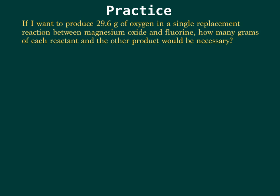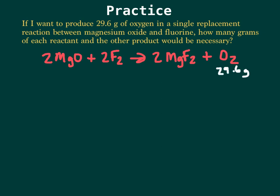So here's a problem that you can practice. It says you want to produce 29.6 grams of oxygen in a single replacement reaction between magnesium oxide and fluorine. How many grams of each reactant and the other product would be necessary? So the first thing you need to do is try to write a balanced equation. So why don't you pause it and try to write one right now. Okay, hopefully you really paused it, and hopefully you got the same balanced equation that I got. Now, this is what we're starting out with, 29.6 grams of this oxygen right here. And it doesn't matter that it's a product. You have a recipe. A balanced equation is like a recipe. So we can figure out the ratios of how many grams of each other reactant and the other product that we would end up with.